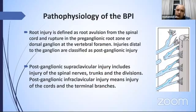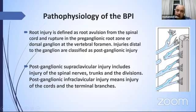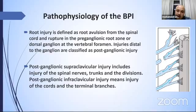Regarding pathophysiology, root injury is defined as root avulsion from the spinal cord. There is a ventral root and dorsal root which has the dorsal root ganglion. Any injury before the dorsal root ganglion is called root avulsion and a preganglionic lesion. Postganglionic lesions are lesions after the dorsal root ganglion, including lesions in the spinal nerve, trunk, and divisions — this is called supraclavicular postganglionic.